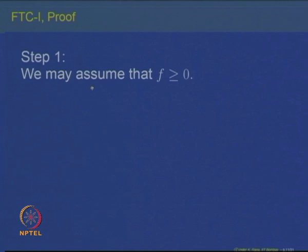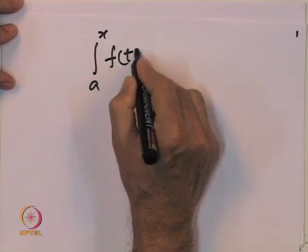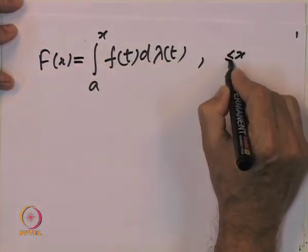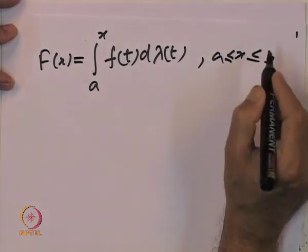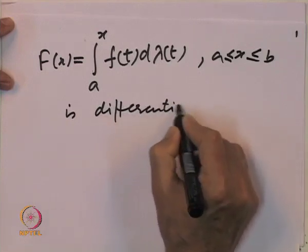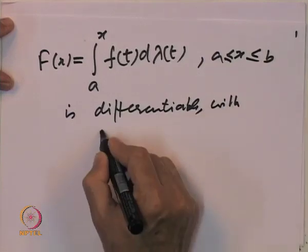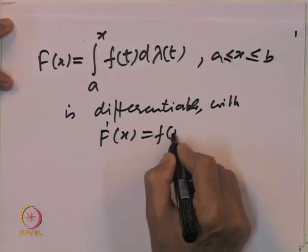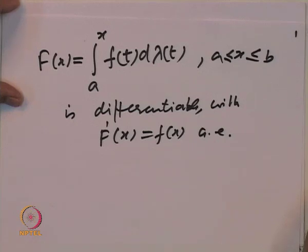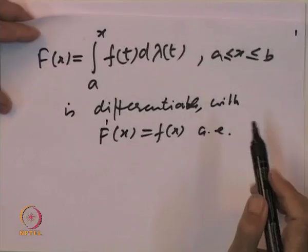Now let us prove the fundamental theorem of calculus Part 1. We want to prove that F(x) = integral from a to x of f(t) dλ(t), for x in [a,b], is differentiable and its derivative F'(x) equals f(x) for almost all x. We know already that F is differentiable almost everywhere; we only need to identify the derivative.